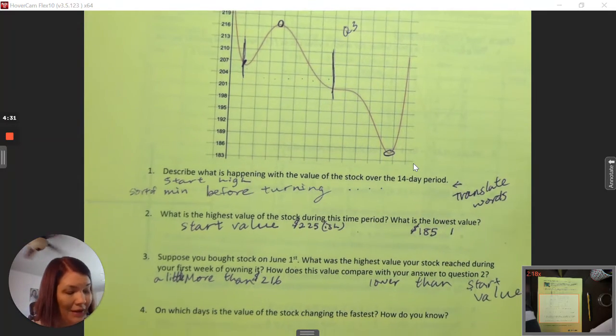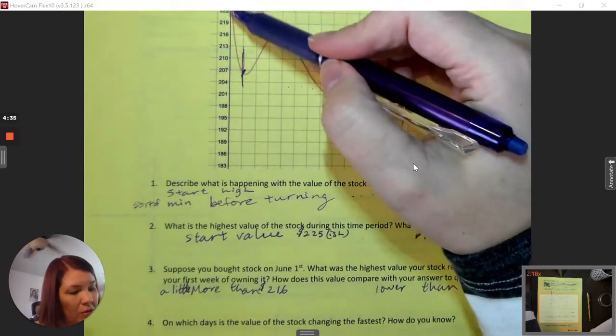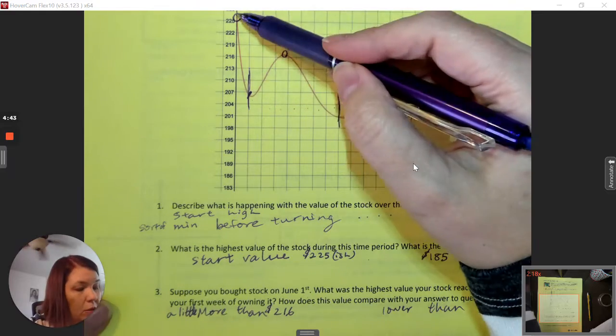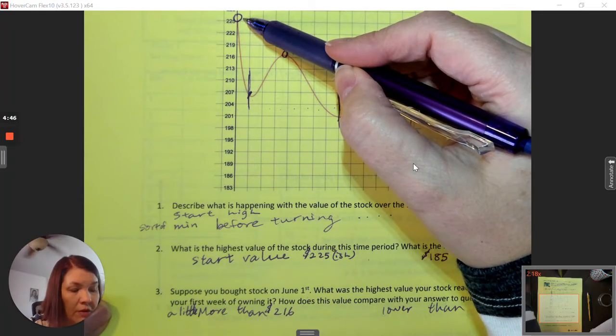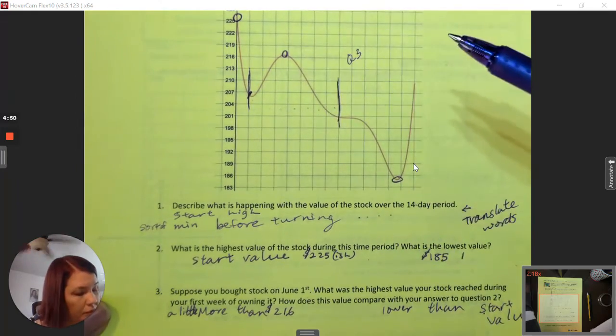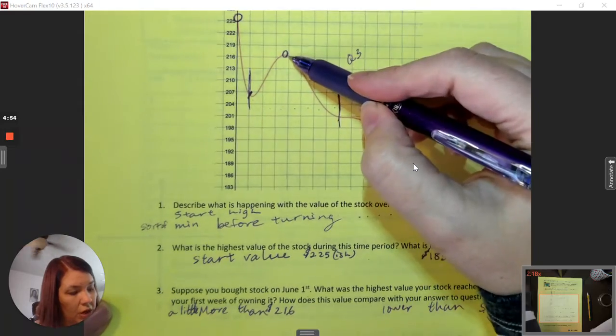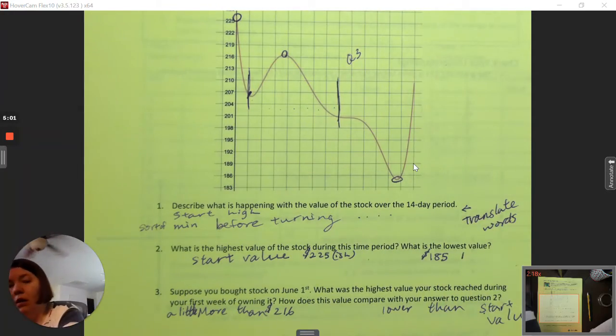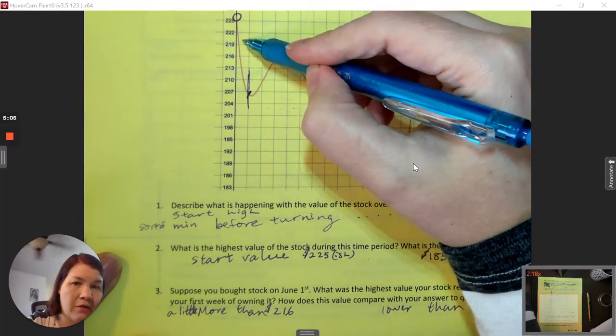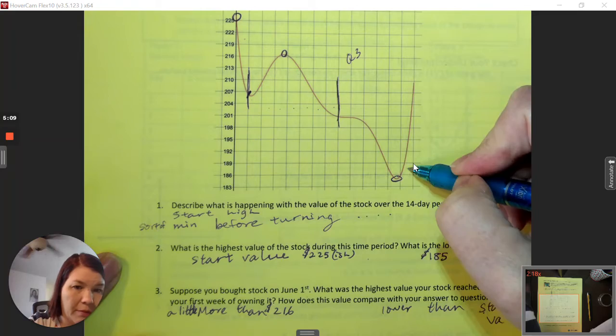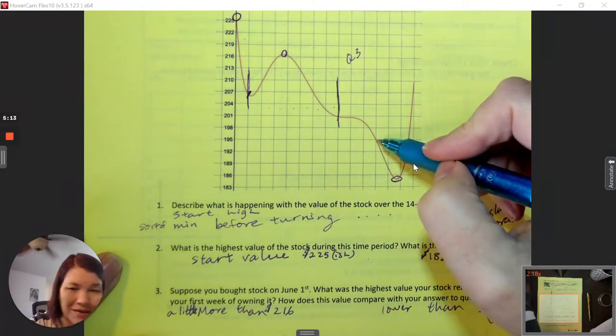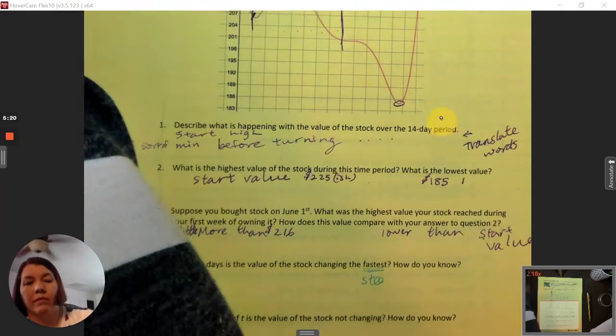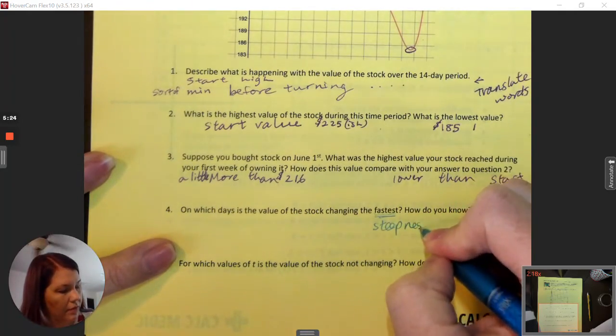When is it changing the fastest? So now we're talking about the slope. We talked about how it was decreasing really rapidly in that first day. Something must have happened on May 31st that caused stock to drop so much in one day, from above $225 to below $207. So changing the fastest means we're looking at steepness or slope. This is very fast, this is very fast. These are not as fast because they're not as steep. When we say fastest, we're looking at steepness or slope.